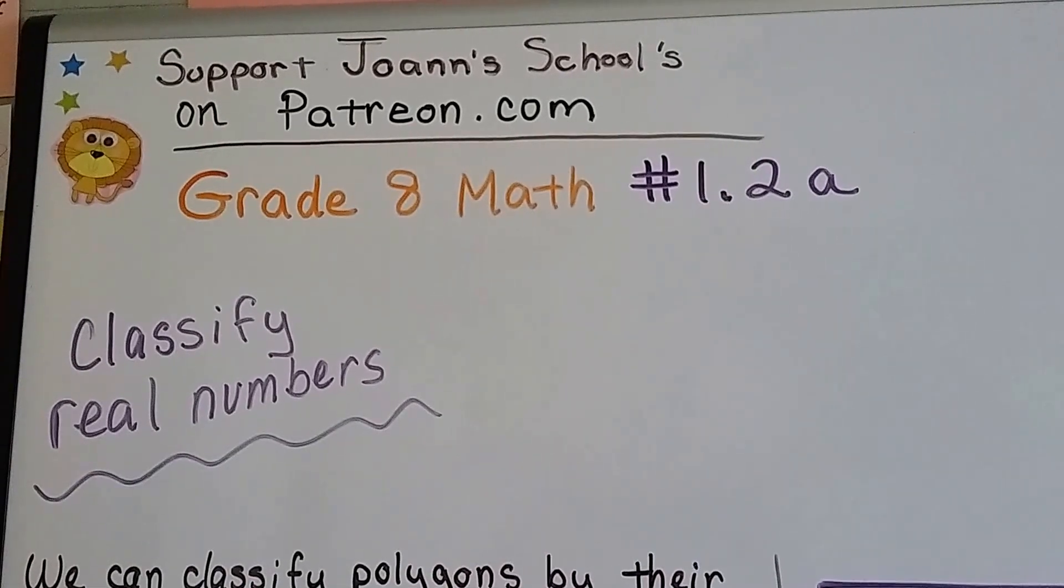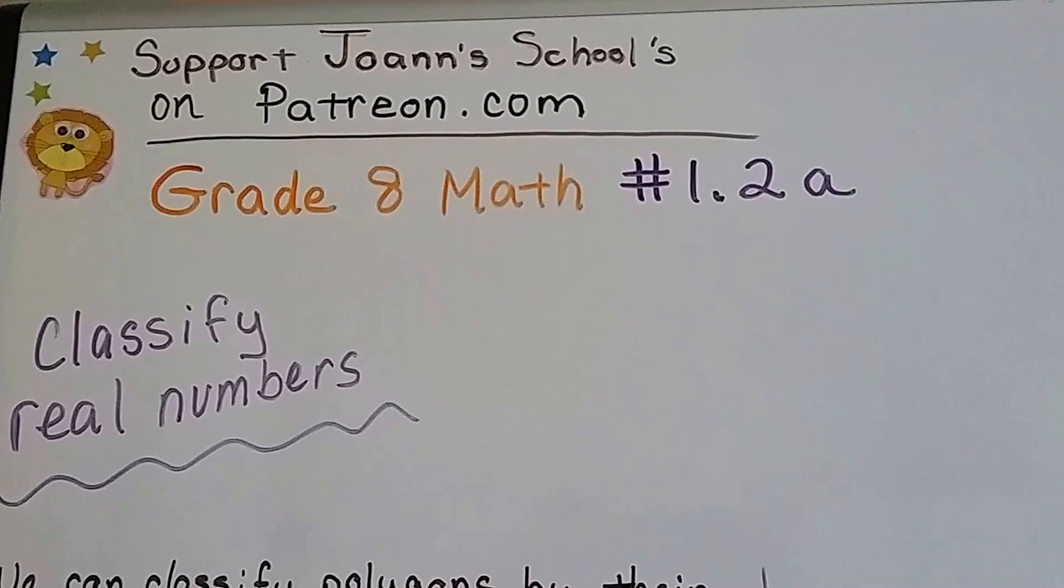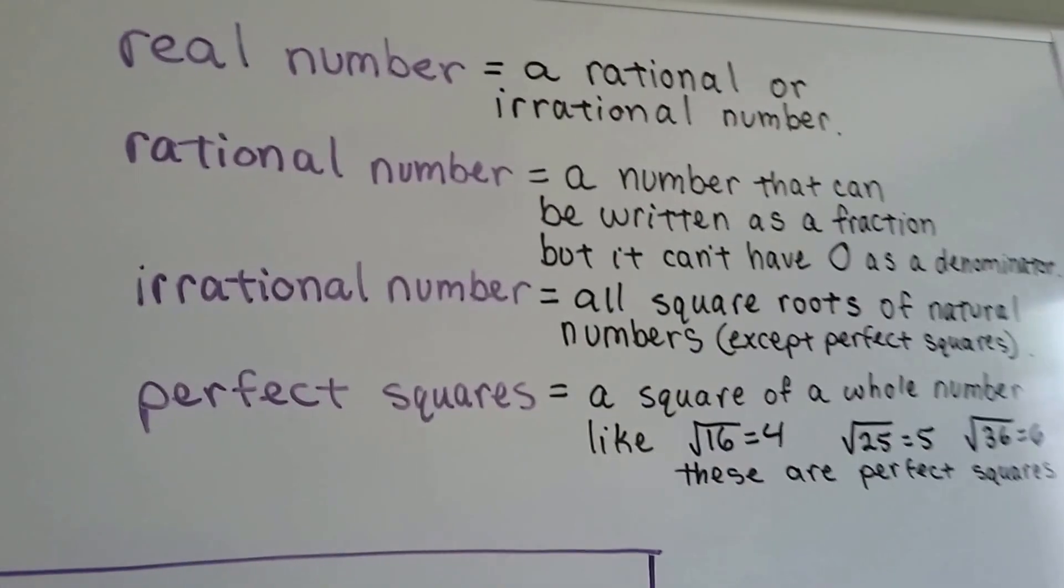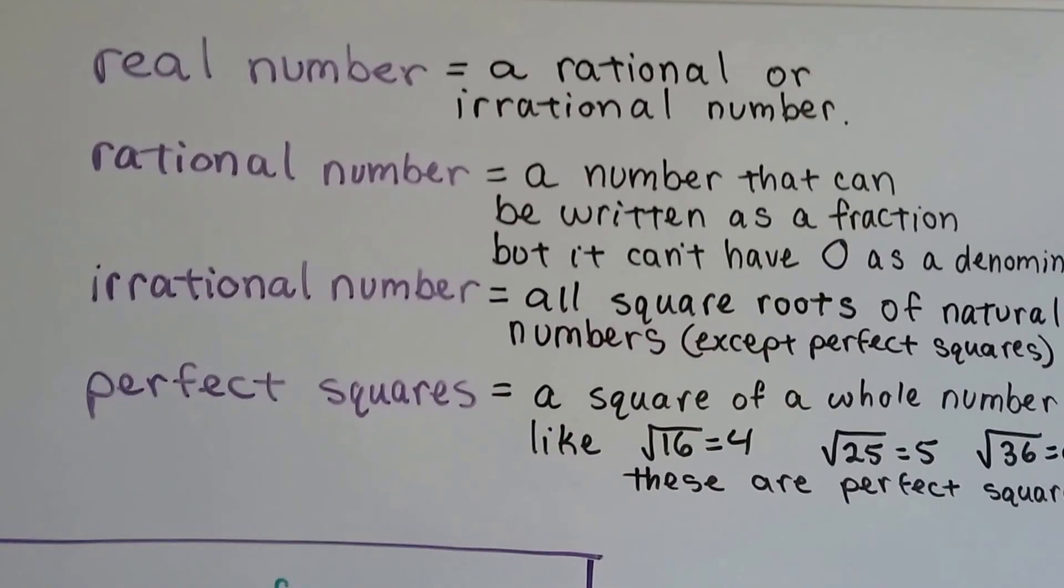Grade 8 math number 1.2a classify real numbers. Real numbers, they're rational or irrational numbers. What are those?